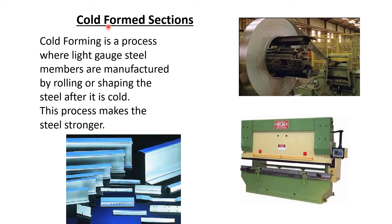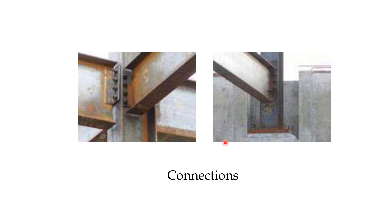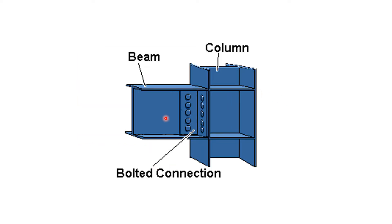Here is an example of a steel structure framework showing beams and columns, with a connection left for building extension upward. You can see beams connecting to columns, and two beams connecting to one column. Here is also a modeling example in software showing beam, column, and bolted connections. We can design these steel structures using various software available in the market.